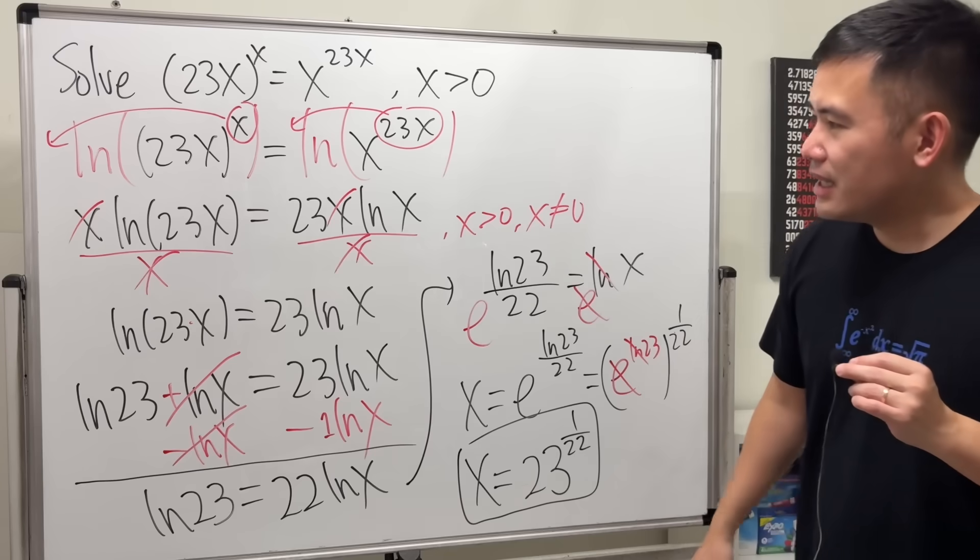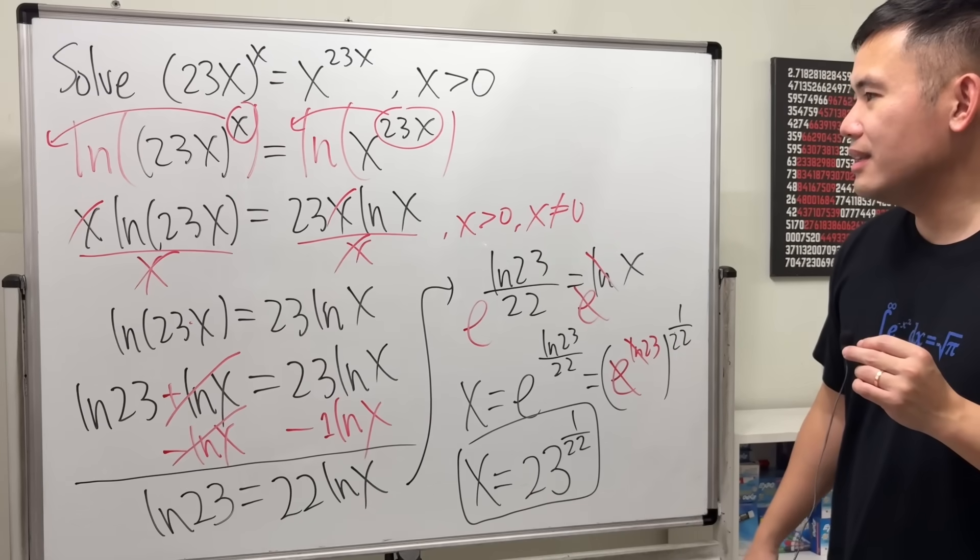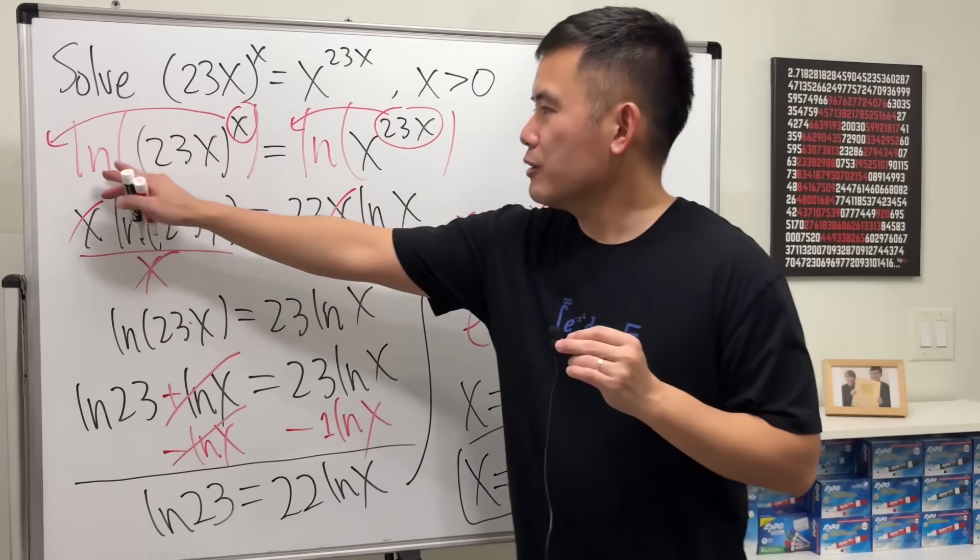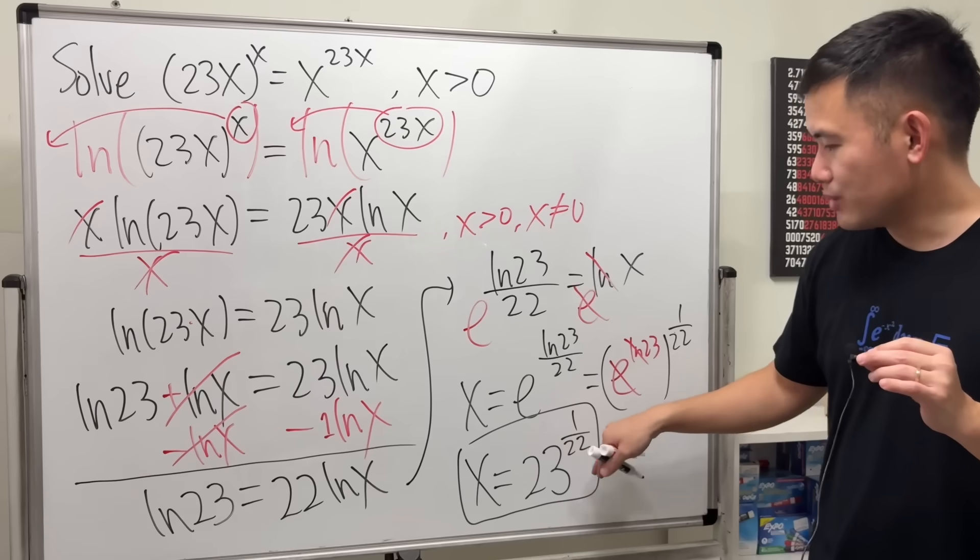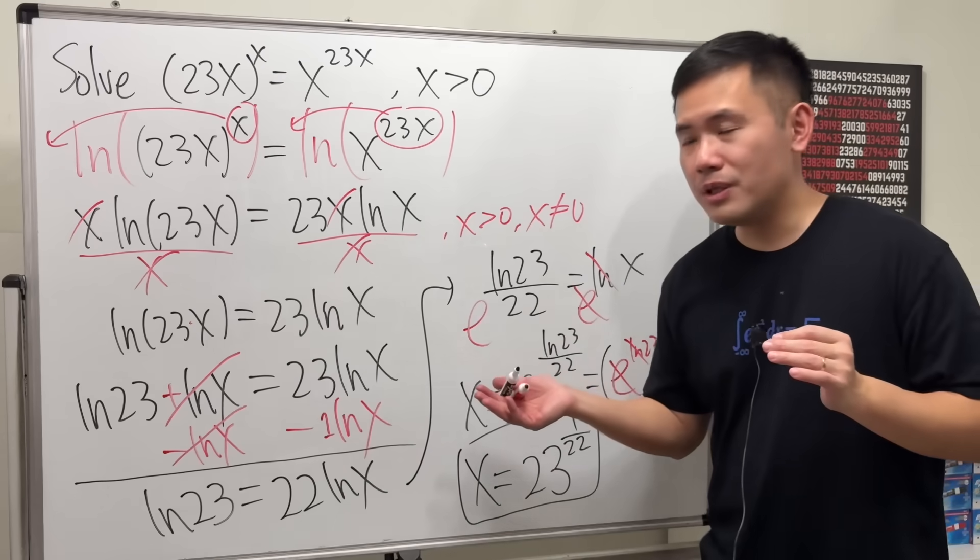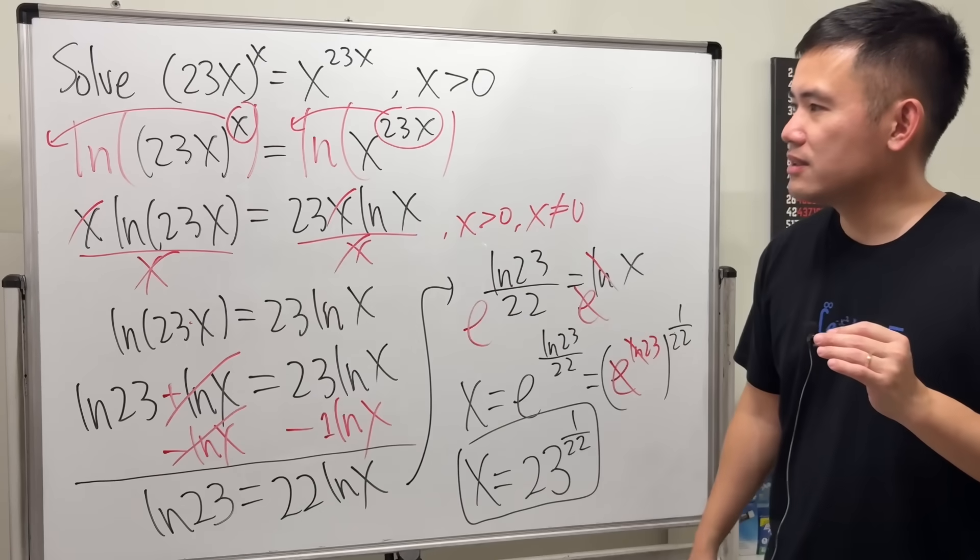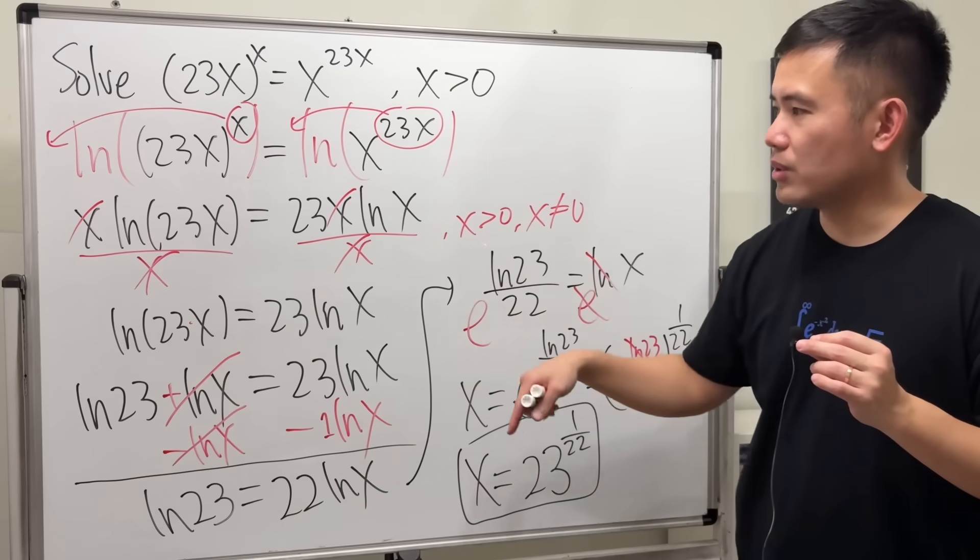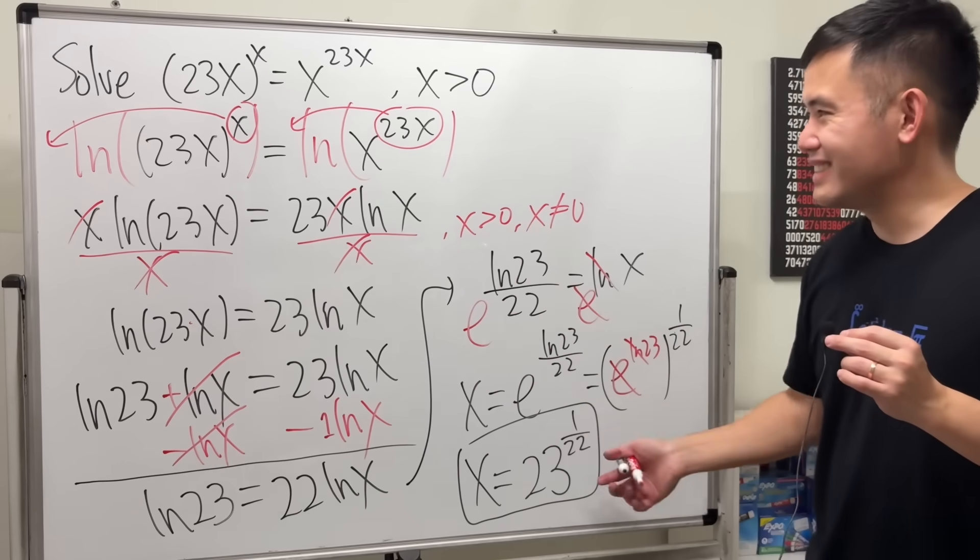And I think if you took log base 23 on both sides, you can get this step much faster. But maybe sometimes we wouldn't be able to see that during the process, so that's why I took the natural log. And yeah, just like this.